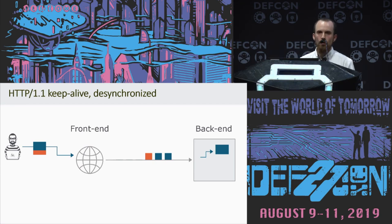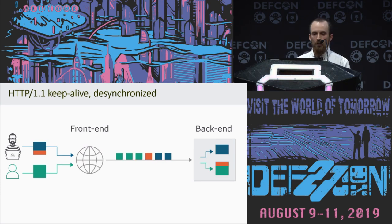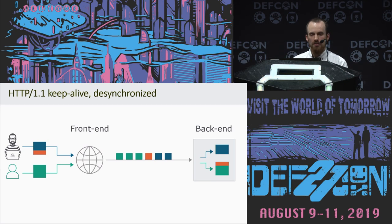So here the front end thinks this is one request, so it's forwarding the whole thing onto the back end. But the back end, for some reason, thinks this message ends with the final blue square, so it thinks the orange square is the start of the next request. It's just going to wait for this phantom request to be completed until the front end routes another request onto the back end over the same socket, and then we end up with these two requests being merged together. The essence of request smuggling is that you can set up a prefix on the back end that will be applied to the next request that hits the back end, whether that request is sent by us or by somebody else.